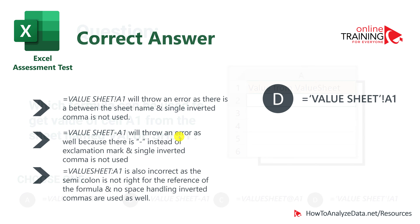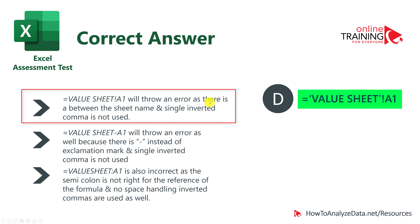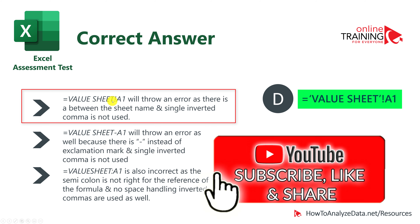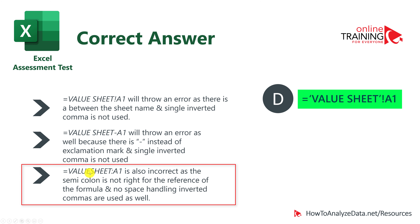Going back to the document, the correct choice is 'value sheet' in single quotes followed by A1, which is choice D. Other choices are incorrect: choice A without quotes shows an error because you cannot use a space in the sheet name without single quotes. Choice B uses a minus sign, which is not a valid sheet reference. And choice C uses a colon, which is not the correct operator to reference a sheet.